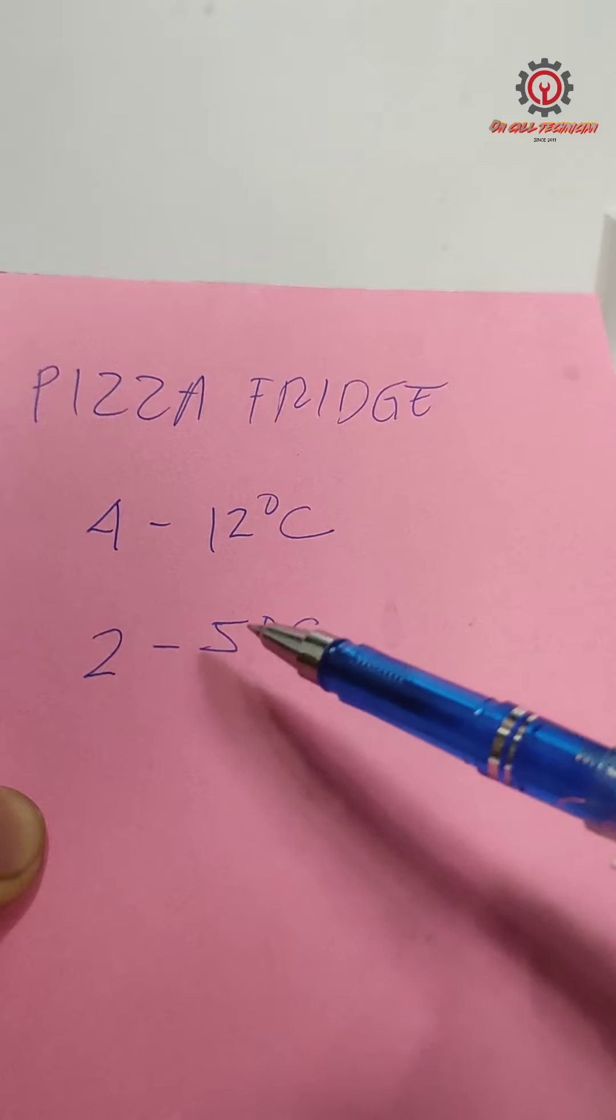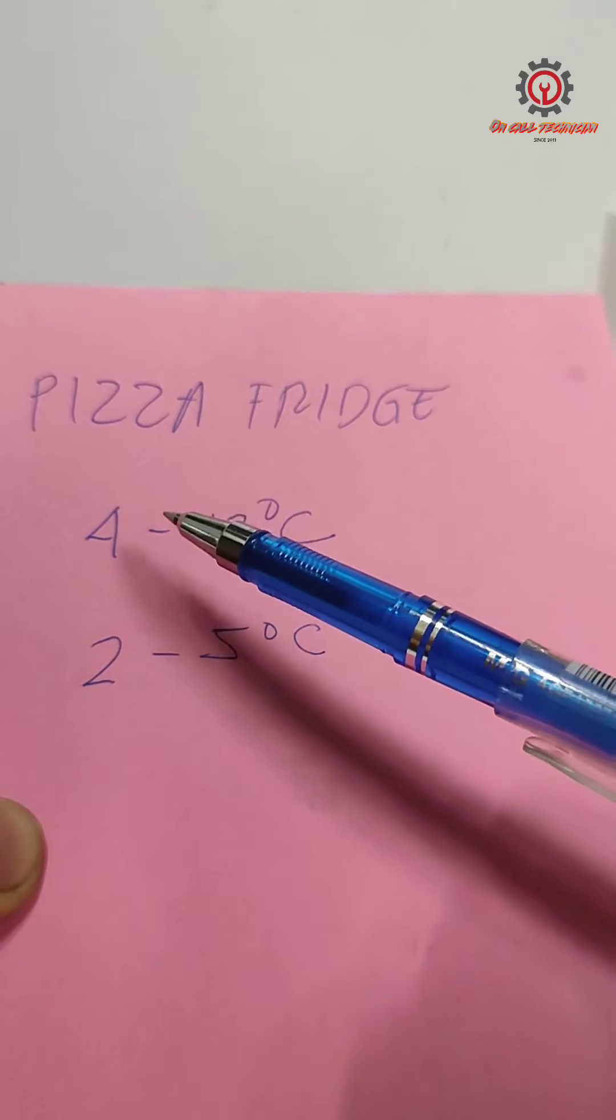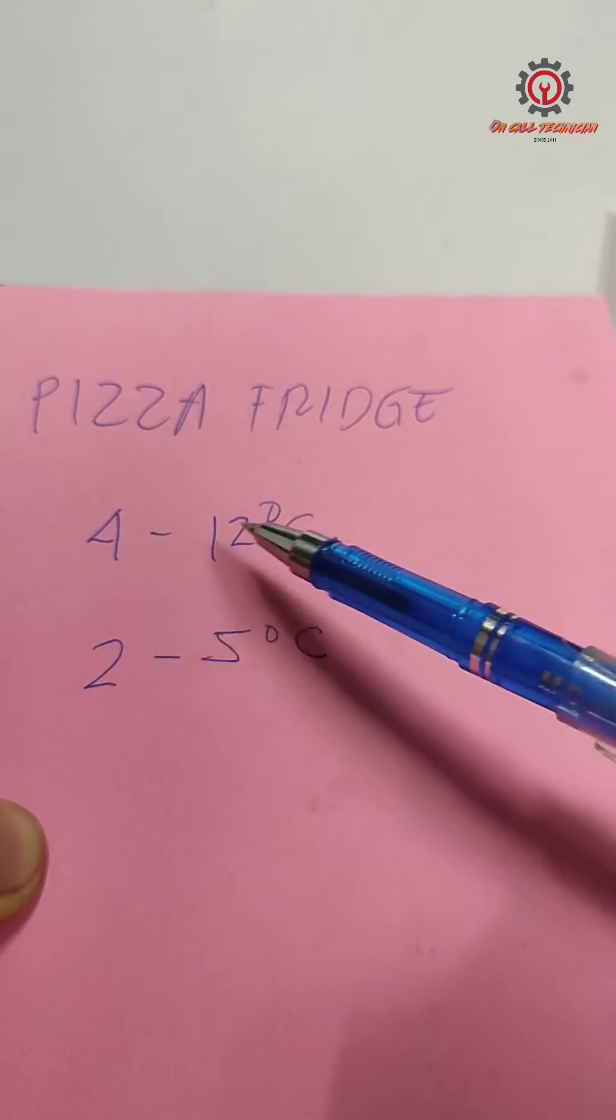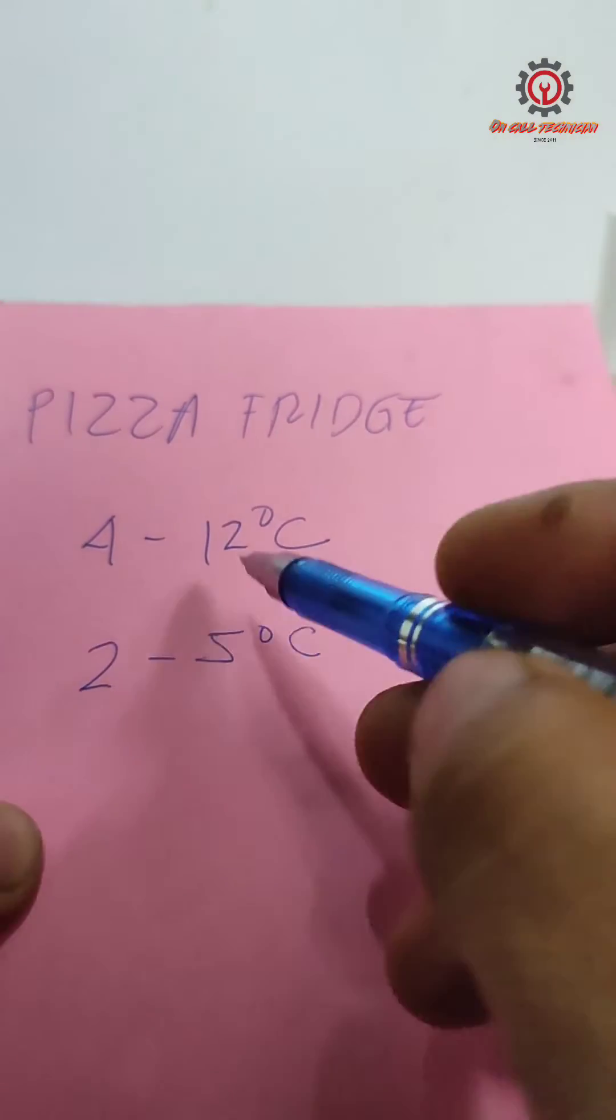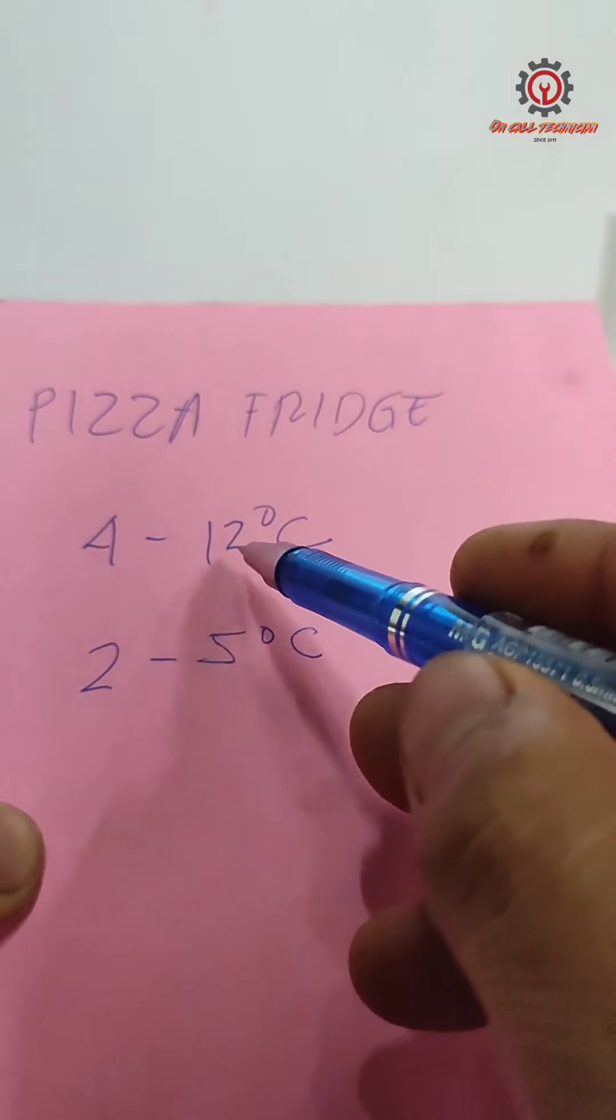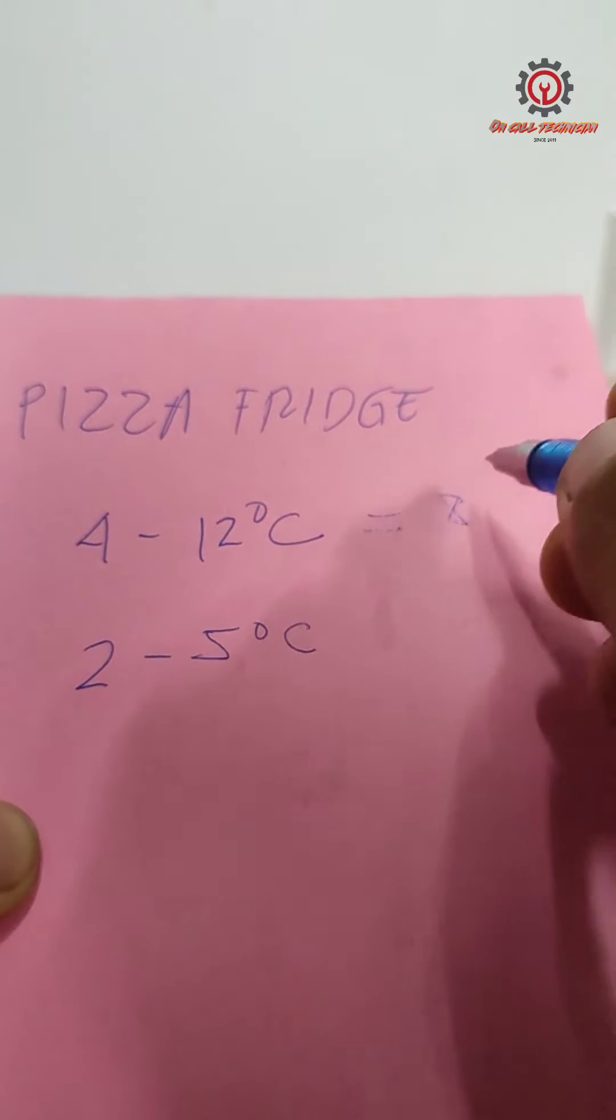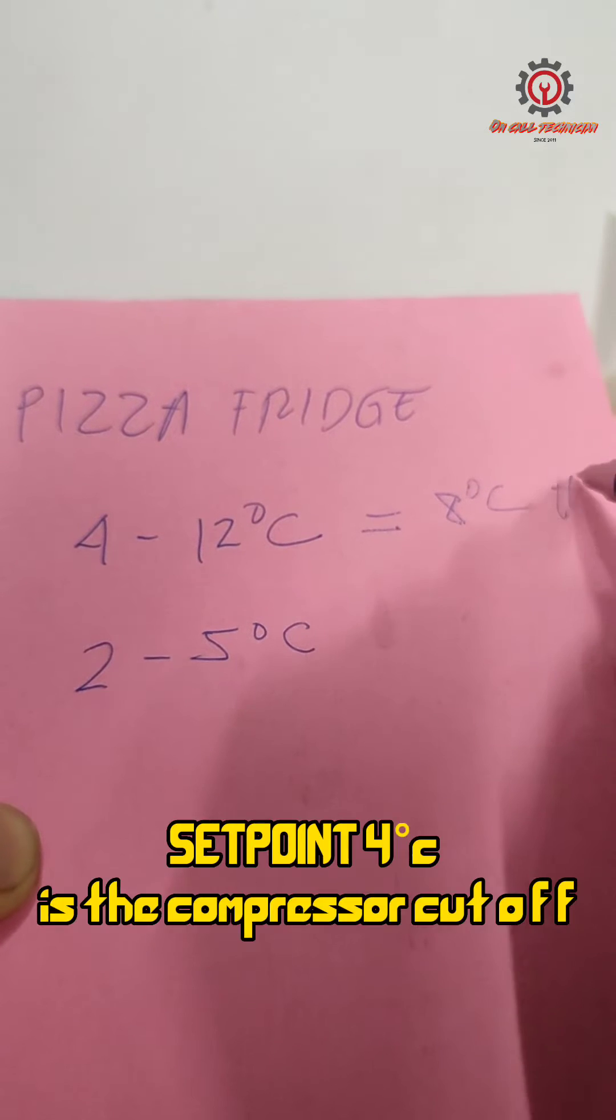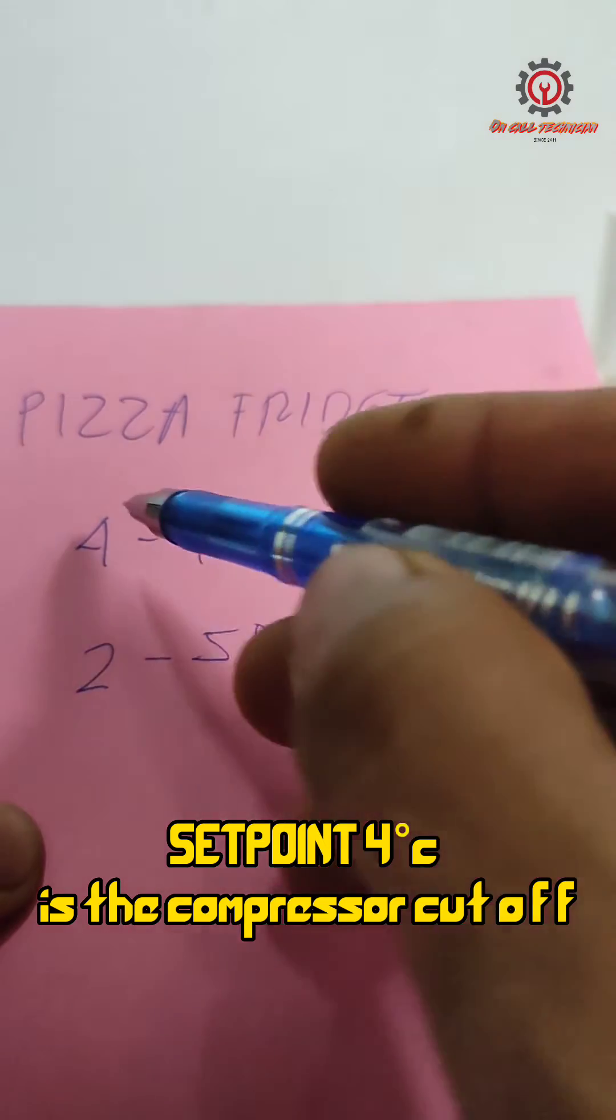Currently the stored value in his controller is 4 to 12 degrees Celsius. Now if you're going to minus this: 12 minus 4 is 8 degrees Celsius. Therefore, the 8 is the HY, the cut-in of the compressor.